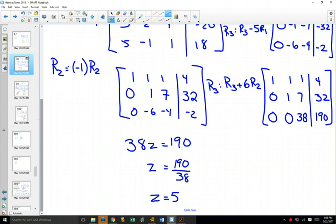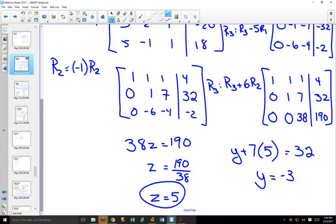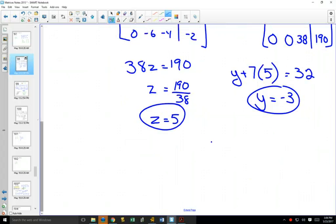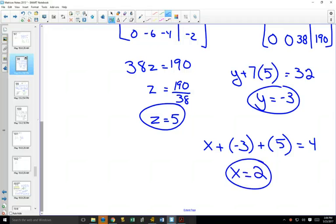So we get z is equal to 5. Once we've got z is equal to 5, we can work one equation at a time backwards. A second equation says that y plus 7z is equal to 32. This is 35. y is equal to negative 3. Once we've got both of those, we can go back to our first equation, x plus y plus z is equal to 4. x is equal to 2. So our solution as a point in three dimensions is 2, negative 3, 5.